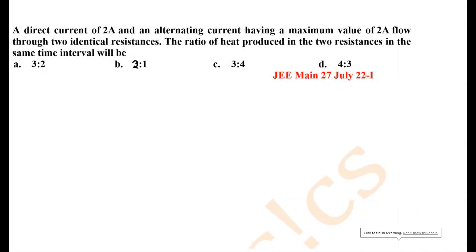A direct current of 2 amperes and an alternating current having a maximum value of 2 amperes flow through two identical resistances. The ratio of heat produced in the same time interval needs to be found. For the DC circuit, what is the formula for heat produced?